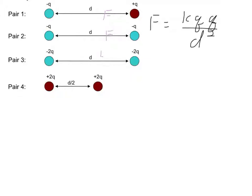Pair 3 would be equal to 4F, the force in between them, because we doubled both charges, and then pair 4 would actually be 16F because now we have the distance in between them halved.